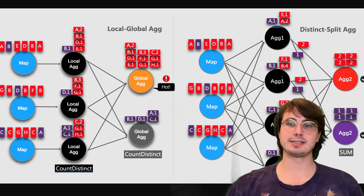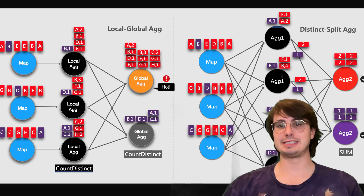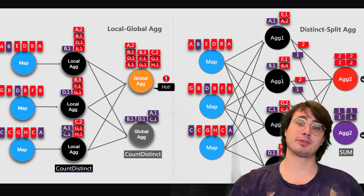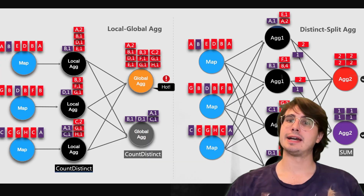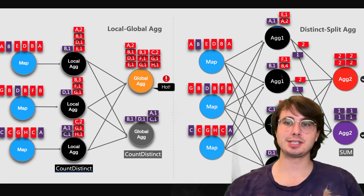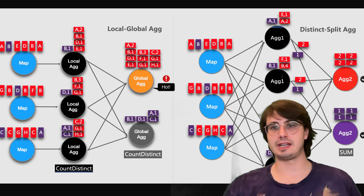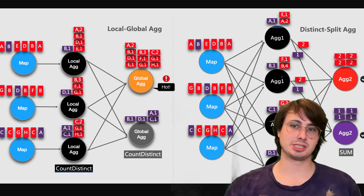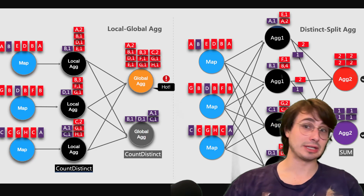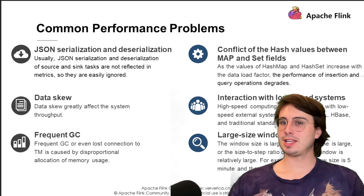Be cautious about creating overly long chains that might create unbalanced load distribution, and use the disable-chaining feature selectively for operators with significantly different resource requirements. Data skew is another common performance problem in distributed processing, so identify skewed keys through monitoring and implement appropriate mitigation strategies. Options include key salting, two-phase aggregation, or custom partition strategies. For windowed operations, consider using sliding windows instead of tumbling windows to spread the computational load more evenly.